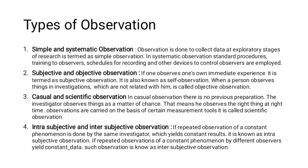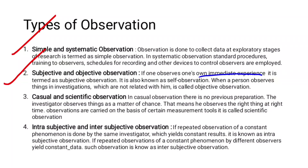Next, subjective and objective observation. If one observes one's own immediate experience, it is termed subjective observation — also known as self-observation, where the person evaluates and observes themselves. When a person observes things in an investigation not related to themselves, that is objective observation.